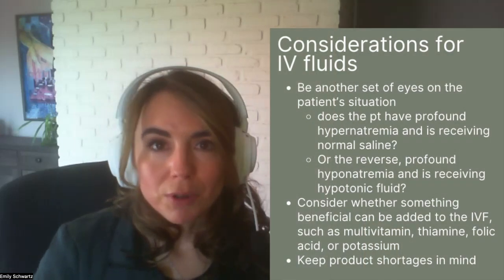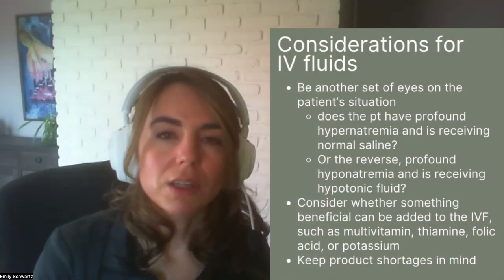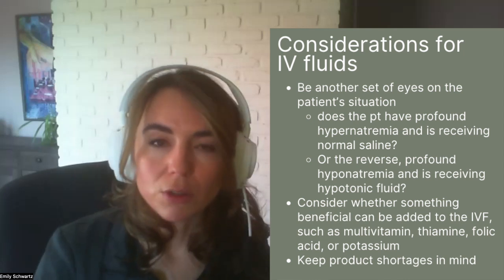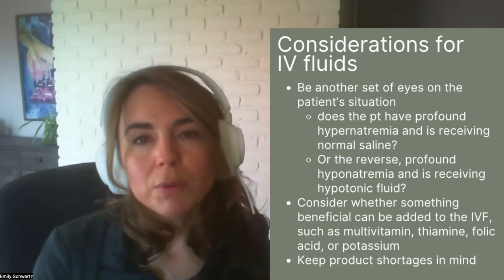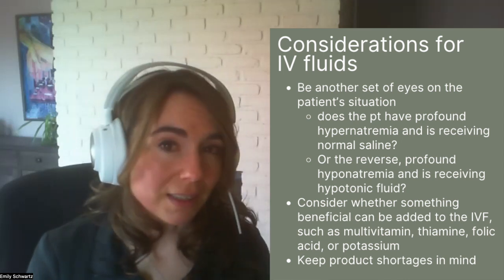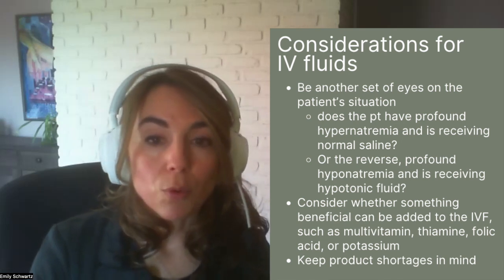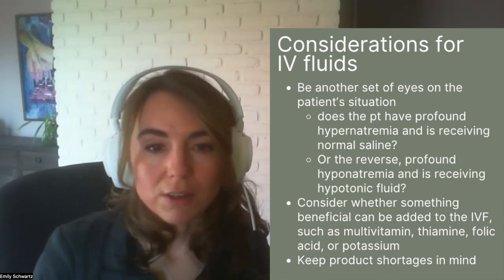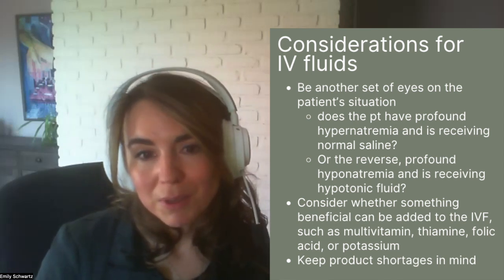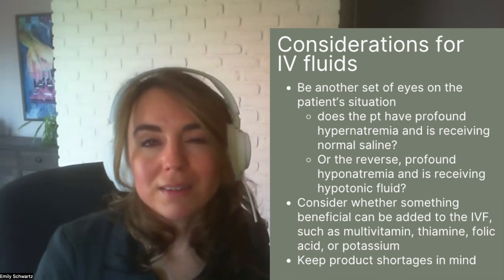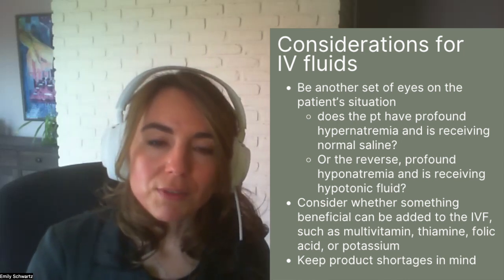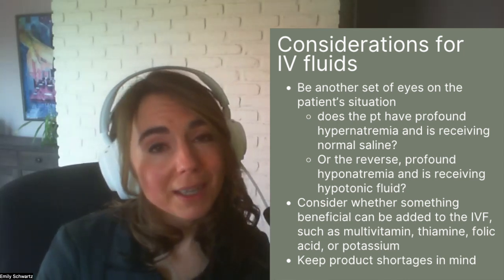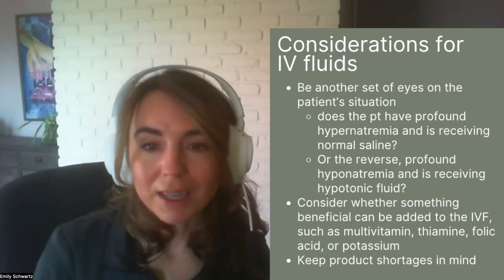For those who don't have order writing privileges or who don't yet feel comfortable getting involved in IV fluid management, that's okay — you can still just be another set of eyes. As you get comfortable, pay attention and notice, for example, whether a patient has profound hypernatremia and is receiving normal saline when they may benefit from a more hypotonic solution, or the reverse — a patient with profound hyponatremia receiving hypotonic fluid. Look for opportunities to recommend adjustments. Keep in mind there are situations where seemingly unusual orders may be appropriate, such as when a hypotonic solution is ordered to slow the rate of sodium correction in hyponatremia. But if you can't see a clear rationale, it usually doesn't hurt to ask.